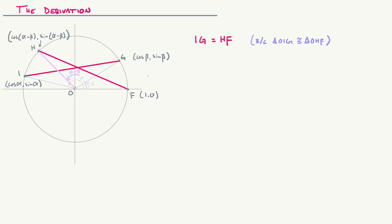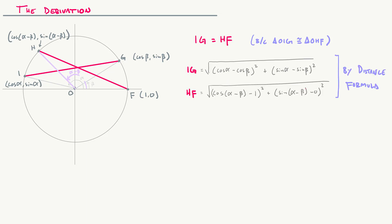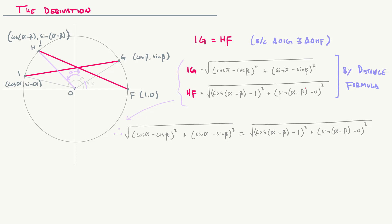I'm going to use the distance formula for I and G using those coordinates and set it equal to the distance formula between H and F. So IG equals the square root of (cosine alpha minus cosine beta) squared plus (sine alpha minus sine beta) squared. HF equals the square root of (cosine of alpha minus beta minus 1) squared plus (sine of alpha minus beta minus 0) squared. Because they're equal, we can set these equal to each other.